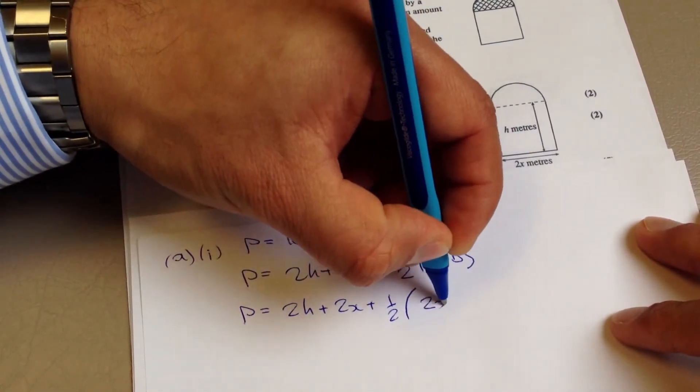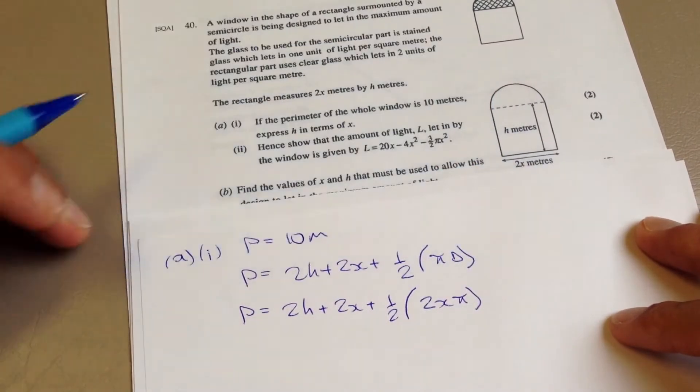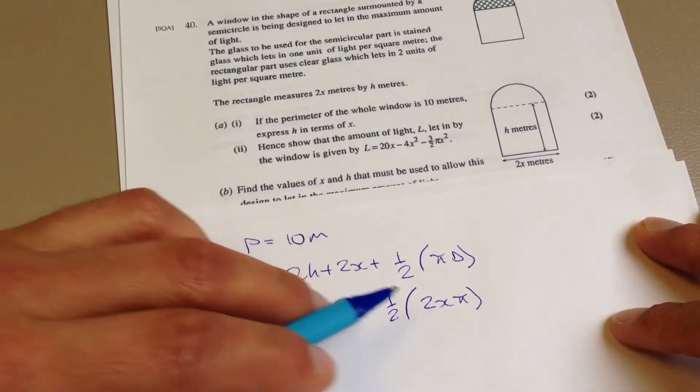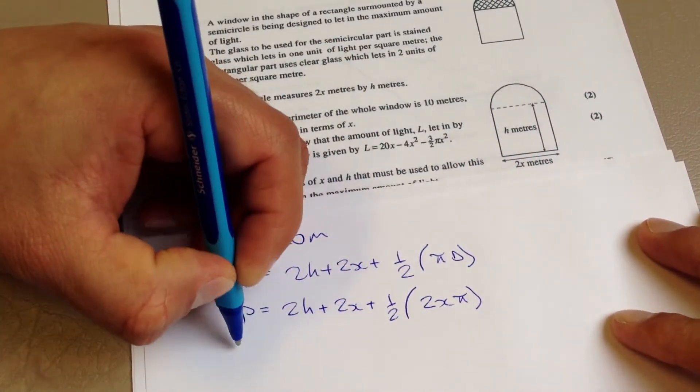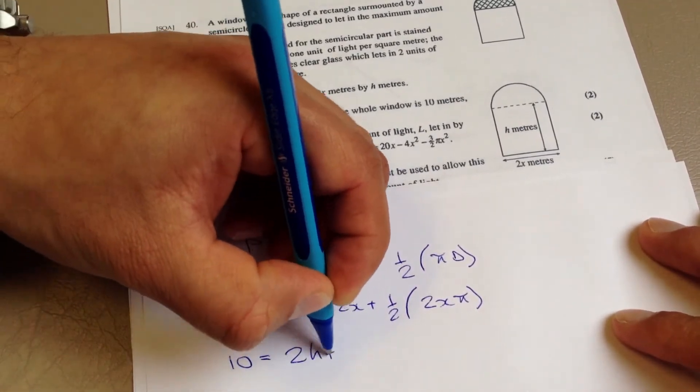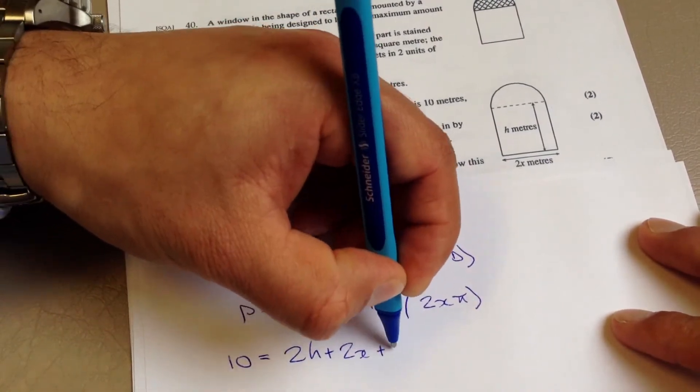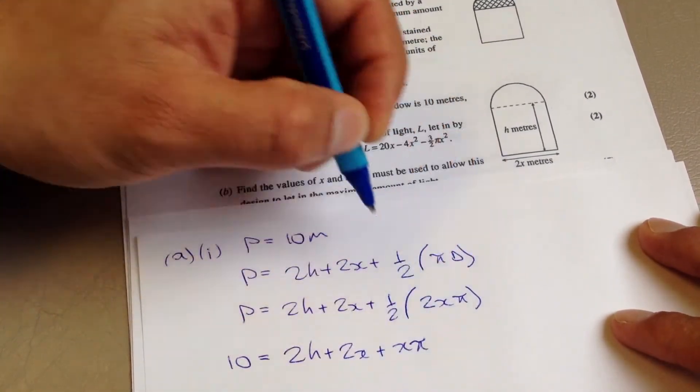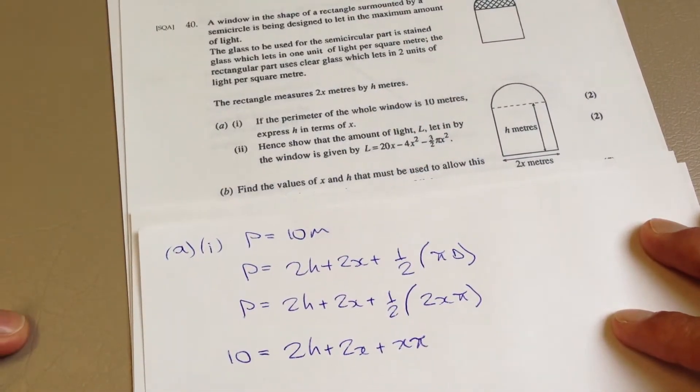So it will be 2x pi, just changing the order around. The half and the two cancel each other out, which will be the perimeter, which is 10, so is 2h, plus 2x, plus x pi, or pi x, however you wish to write it.